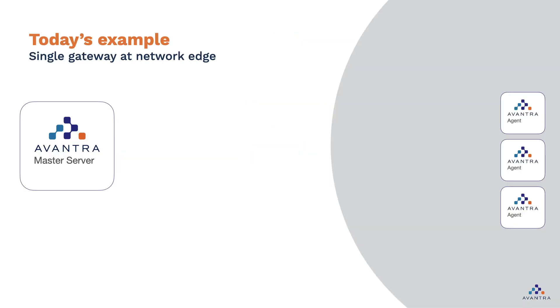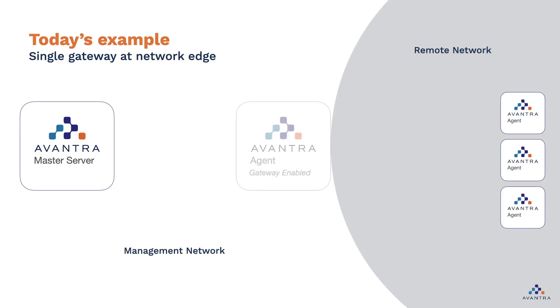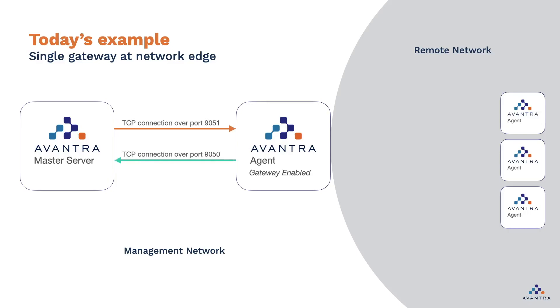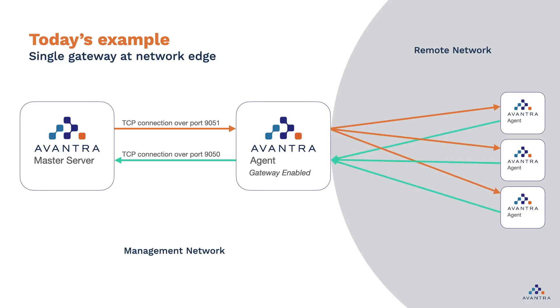In this session we're going to take you through a pretty common example with your master server in a management network and your agents in a remote network. In this case we will set up an agent which has been set up as a gateway and it will facilitate the communication to the agents within the remote network. Welcome back to Mastering Avantra — today's topic is all about agents in remote networks communicating back to your master server.